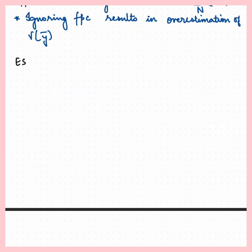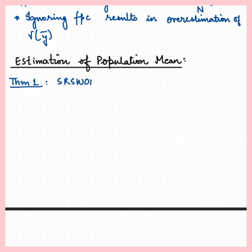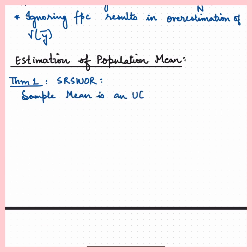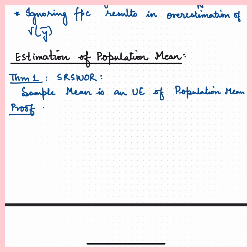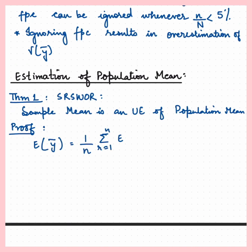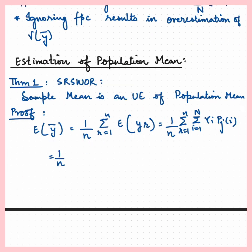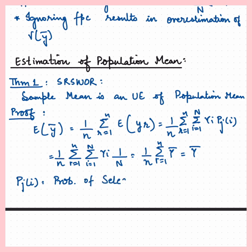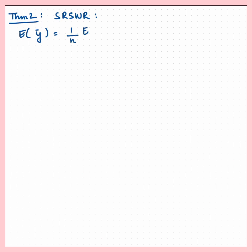Having understood all notation and terminology, we will move on to estimating the population mean. Theorem 1 — simple random sampling without replacement: the sample mean is an unbiased estimator of the population mean. Secondly, even for SRSWR (with replacement), the sample mean is an unbiased estimator of the population mean.